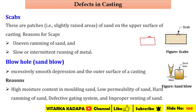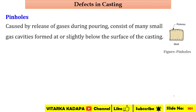Another name for blowholes is sand blow. If the moisture content in the molding sand is high, the evaporation rate will be higher due to the high heat of the molten metal, also causing blowholes. Other reasons include low permeability of the sand, hard ramming of the sand, a defective gating system, and an improper venting system.